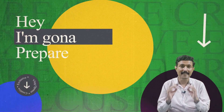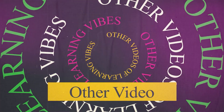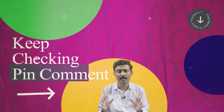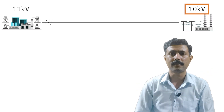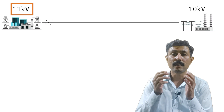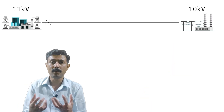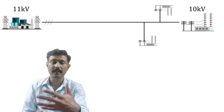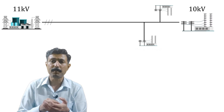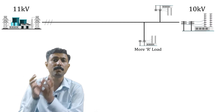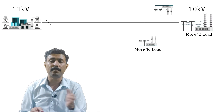You can see in this example that at the load end we are getting 10 kV, and we are sending 11 kV from the power station side. But the load is not only lumped at one place — the load is distributed. Some load is 50 km away, some is 55 km away, some is 65 km away. Also, the type of load is varying: somewhere more resistive load, somewhere more inductive load. If more inductive load, then voltage drop would be higher. If more resistive load, then voltage drop will be less.